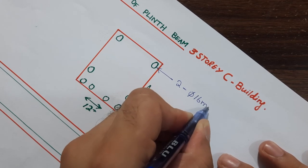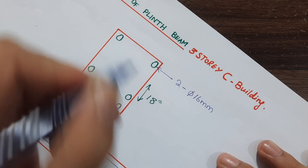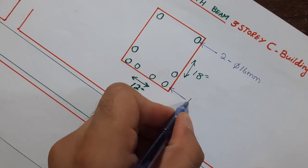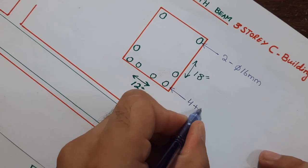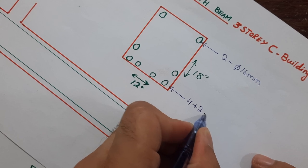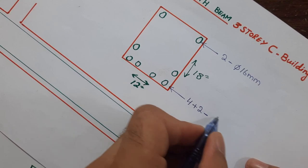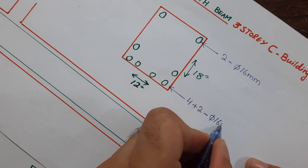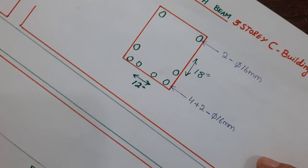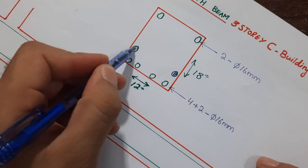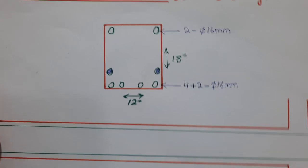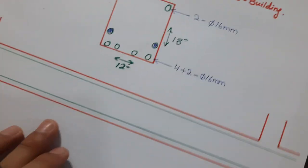The diameter is 16 millimeters at the upper portion, with two bars, and four bars at the bottom portion — that's 4 plus 2. The bottom bars are also 16 millimeters. These two additional bars are side bars at the bottom portion. As I have discussed in many videos, concrete is weak in tension.